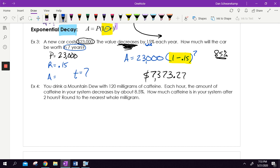Let's do another one. You drink a Mountain Dew with 1,200 milligrams of caffeine. So you get that sugar buzz, that caffeine right away. Each hour, the amount of caffeine in your system decreases by 8.5%. How much caffeine is in your system after two hours? So you drink the Mountain Dew, you get the caffeine. Two hours later, are you going to have more or less caffeine in your system than at the start? Hopefully, you recognize that you're going to have less caffeine in your system.